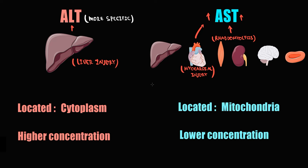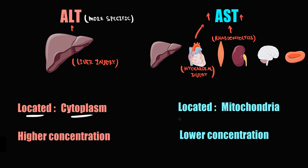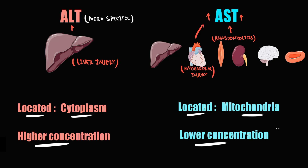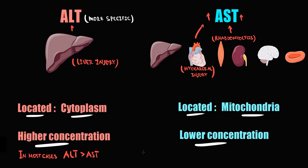ALT is located in the cytoplasm, while AST is located in the mitochondria, and the concentration of ALT inside the hepatocyte is substantially higher than AST. This means that in virtually all cases of liver injury, the amount of ALT entering the blood from damaged hepatocytes will be higher than AST — so ALT concentration in the blood will typically exceed AST. The main exception is alcoholic hepatitis, where AST is usually two times higher than ALT.